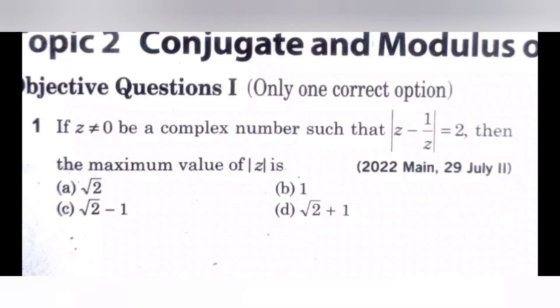Next, sixth question. If Z not equals 0 be a complex number such that mod Z minus 1 by Z equals 2, then the maximum value of mod Z is. Now check the options.